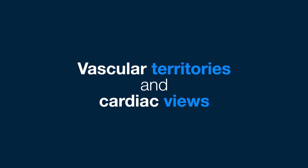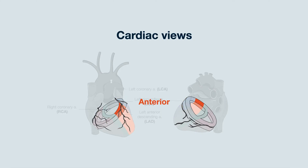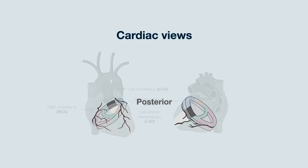What is the difference between a vascular territory and a cardiac view? Reviewing the cardiac anatomy, there are the following major vascular territories: the left circumflex artery, the left anterior descending artery, septal branches, and the right coronary artery. These are each associated with specific cardiac regions or views, which are the lateral, anterior, septal, inferior, and posterior aspects of the heart.